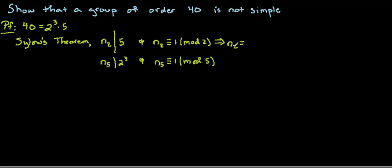So we have two possibilities here. The number of Sylow-2 subgroups could be 1, there could be just one of them, or there could be 5 of them. So that's some information that's fairly useful.